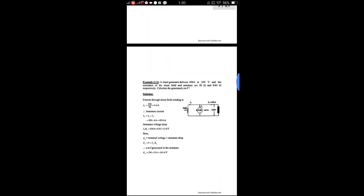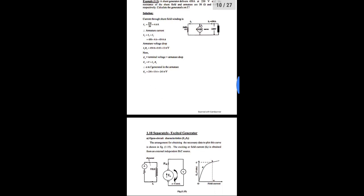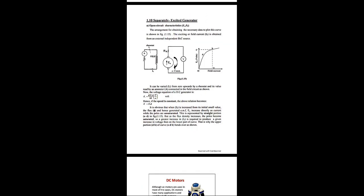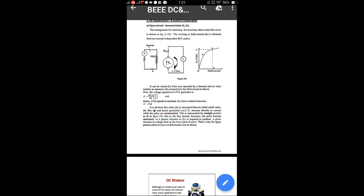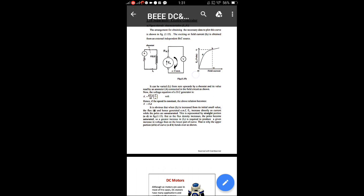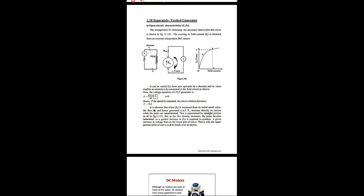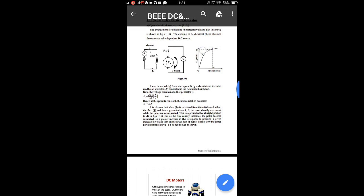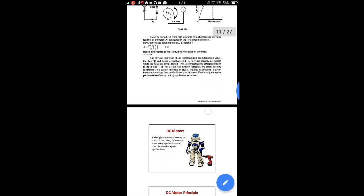For a separately excited DC generator, open circuit characteristics (OCC) are explained. The OCC — also called magnetization characteristics — is the curve drawn between field current and generator voltage. If we increase the field current, the magnetic flux increases, and thus the generator voltage increases. From the graph, we can determine at which field current the maximum generated voltage is obtained.